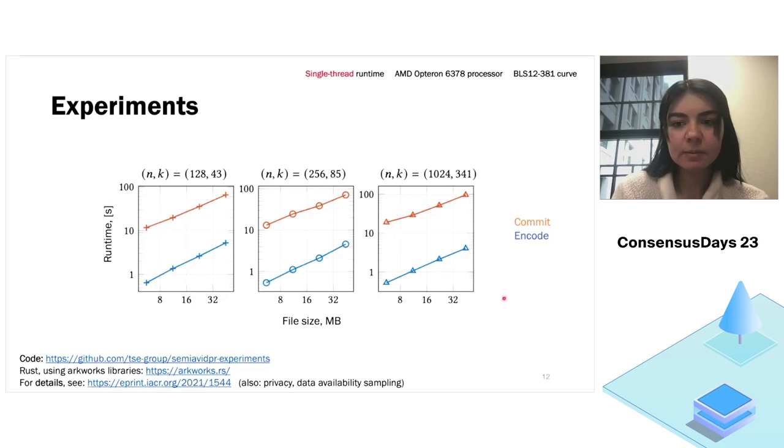We also have some experiments. And here, as you can see, I have three plots for different data availability committee sizes. And here I plot commit and encode step. And these are the steps that are being called most of the times because they are used in the disperse step. And this step, this is the functionality that the rollup operator calls all the time. And as you can see, this is practical. And also note that all these operations are embarrassingly parallel. And for more details, please check out our paper. There are more experiments and there are also some other sections that I didn't cover today, such as privacy and data availability sampling. Thank you.